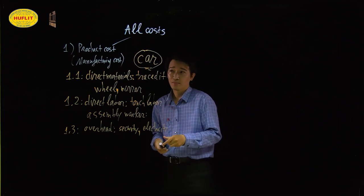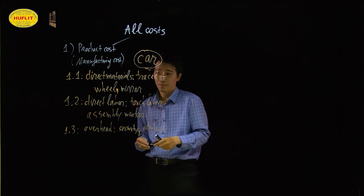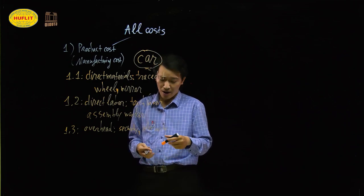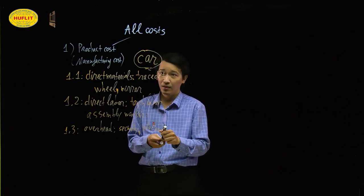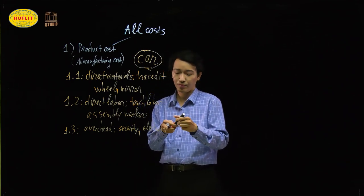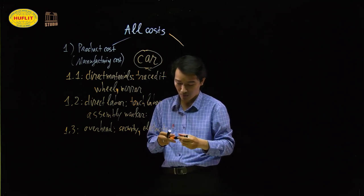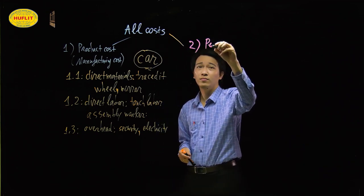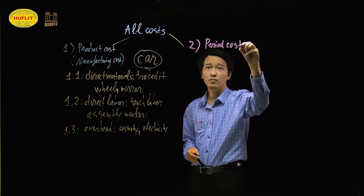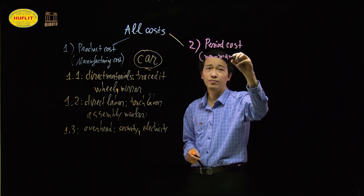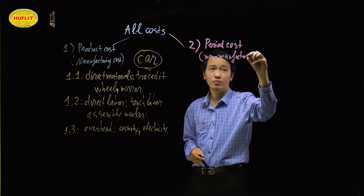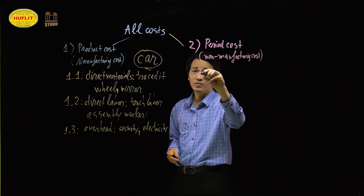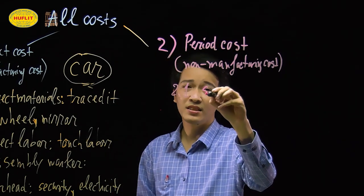As we can see on the left hand side, the product cost includes three different types of cost: direct material, direct labor, and overhead. After we make the finished product — the car — we have the second category, called period cost, or another name, non-manufacturing cost. Inside period cost we have two different types: the first is selling cost.